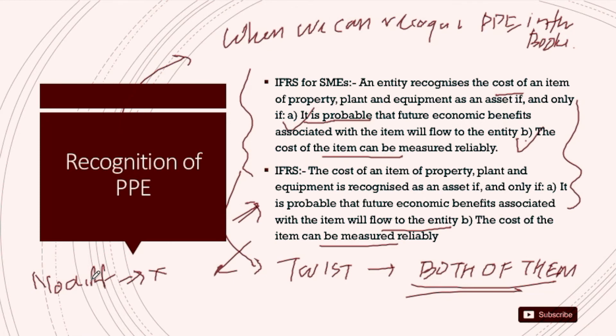However, there is an amendment in the recognition of any asset in the conceptual framework itself. There are subjectivities involved in the recognition of any asset. Rather than going by the older definition, you should refer to the definition provided by the updated framework. This is applicable for both full IFRS and IFRS for SMEs, as IASB has not specified any exclusion for SMEs. Read the recognition criteria from the framework and apply it to PP&E for both standards.